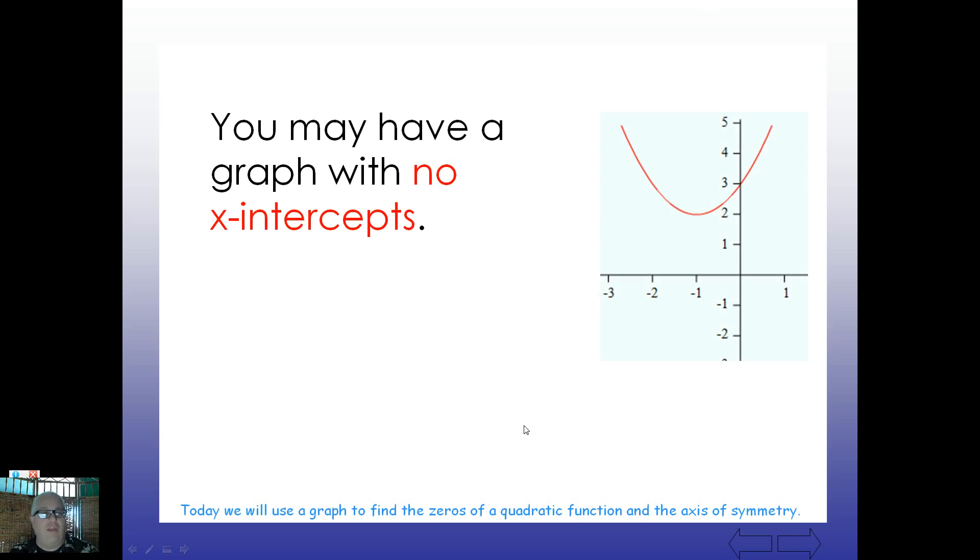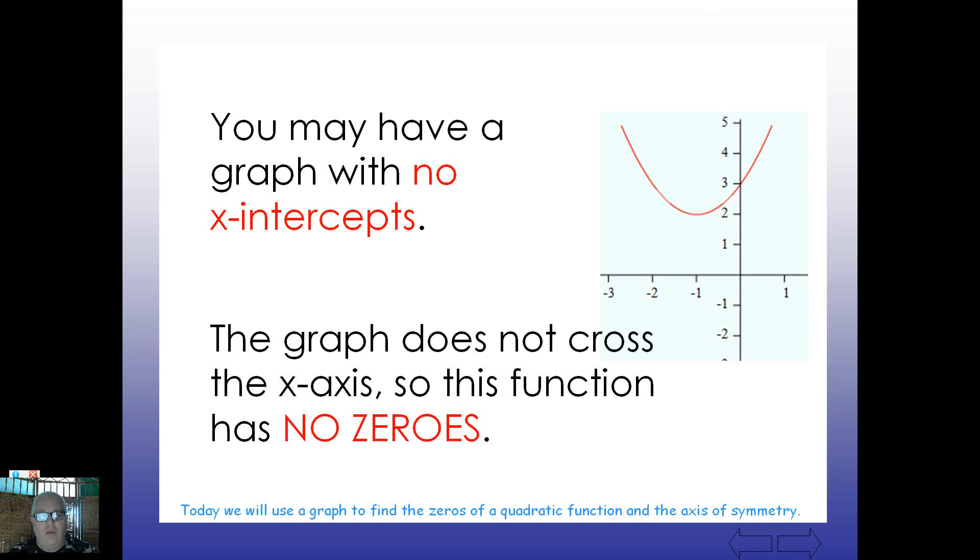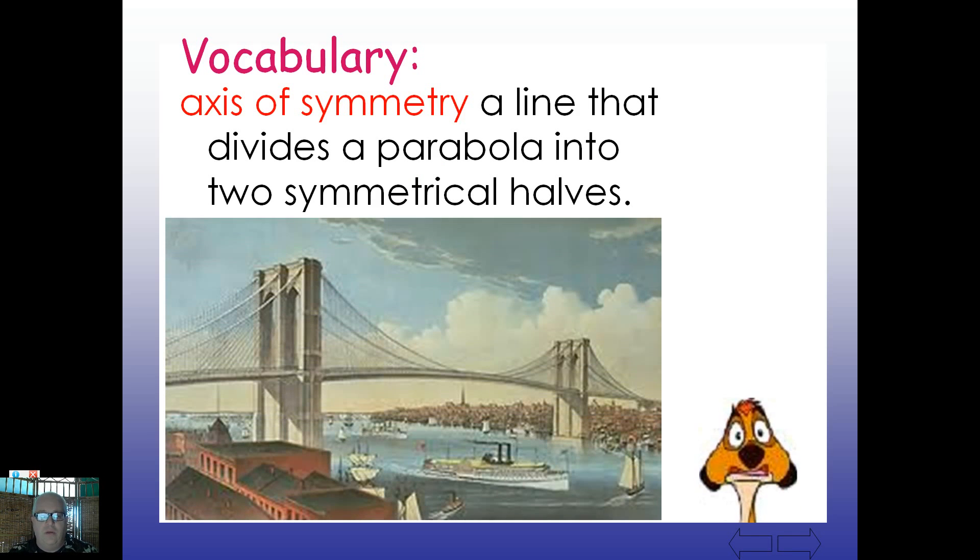How about this one? This graph has no x-intercepts at all. So the graph that does not cross the x-axis of this function has no zeros. No x-intercepts and zeros are the same thing. We just use those interchangeably. And yeah, the high-stakes testing will use different words for the same idea.